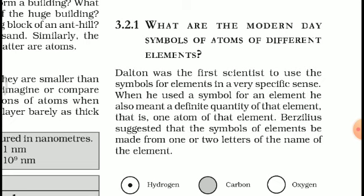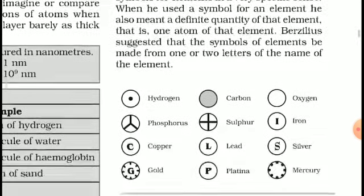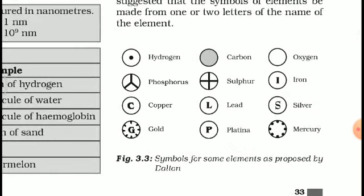Berzelius suggested that the symbols of elements be made from one or two letters of the name of the element. Dalton's symbols for some elements are shown in Figure 3.3.